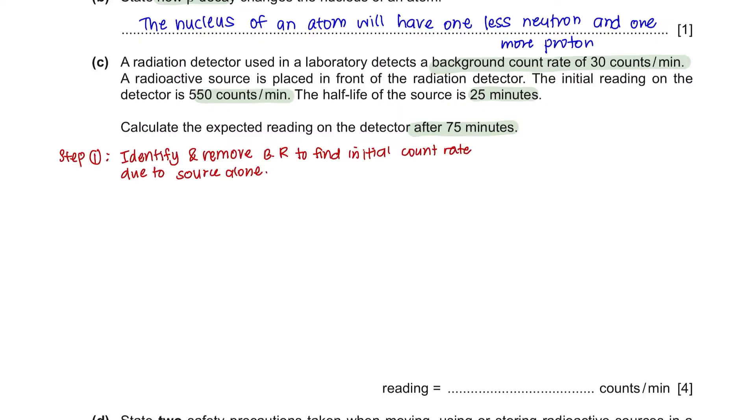Your first step should be to identify and remove background radiation to find the initial count rate due to the source alone. So the detector gives you 550 counts per minute and we know that background radiation which exists at all times is 30 counts per minute. This leaves us with 520 counts per minute, meaning that this is the initial count rate from the source alone without any background radiation.